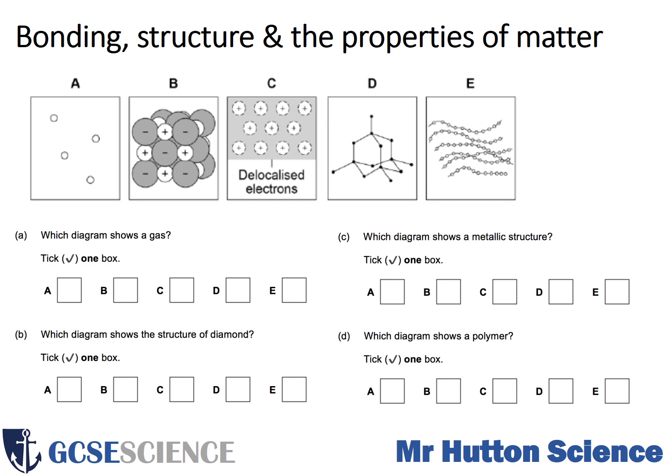In diagram A, you've got a single type of particle that's spread out, not touching, in a random fashion — that should give some hints to what they might be. In B, we've got two different types of particles very close together with opposite charges, positive and negative, in a lattice-type structure. In C, we've got positive particles with delocalized electrons in between, and in D we've got a single type of particle joined together in a lattice structure.